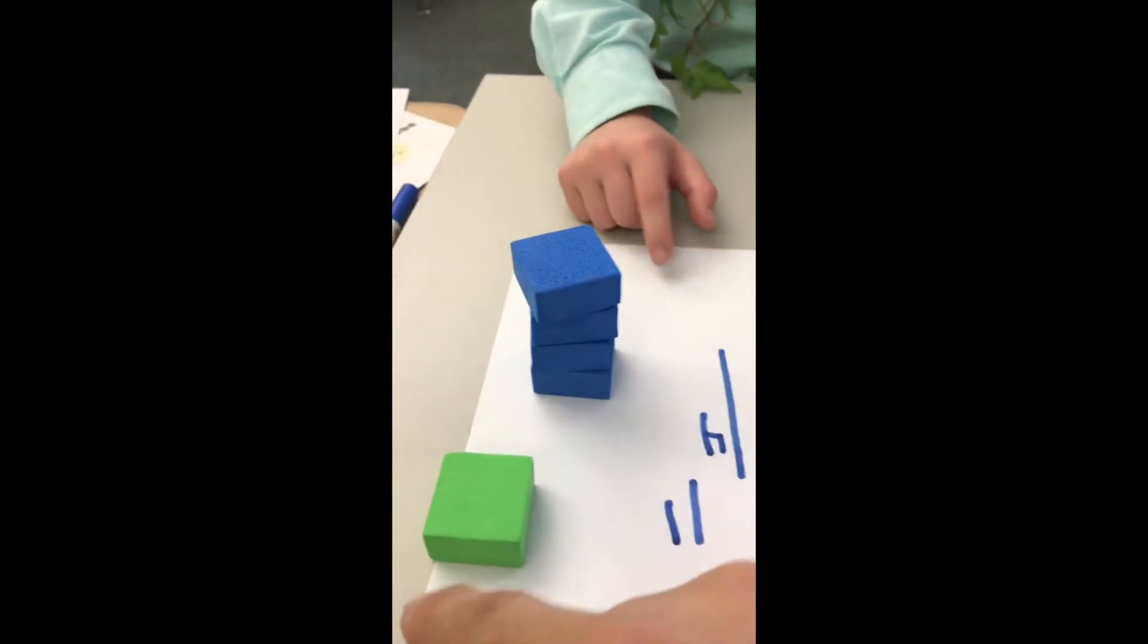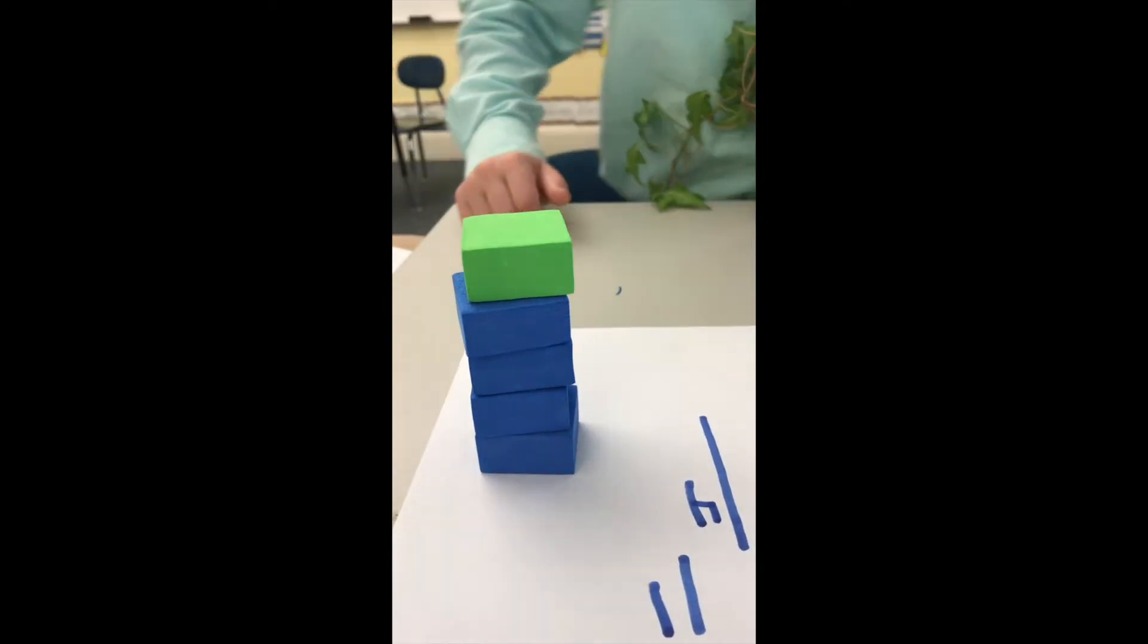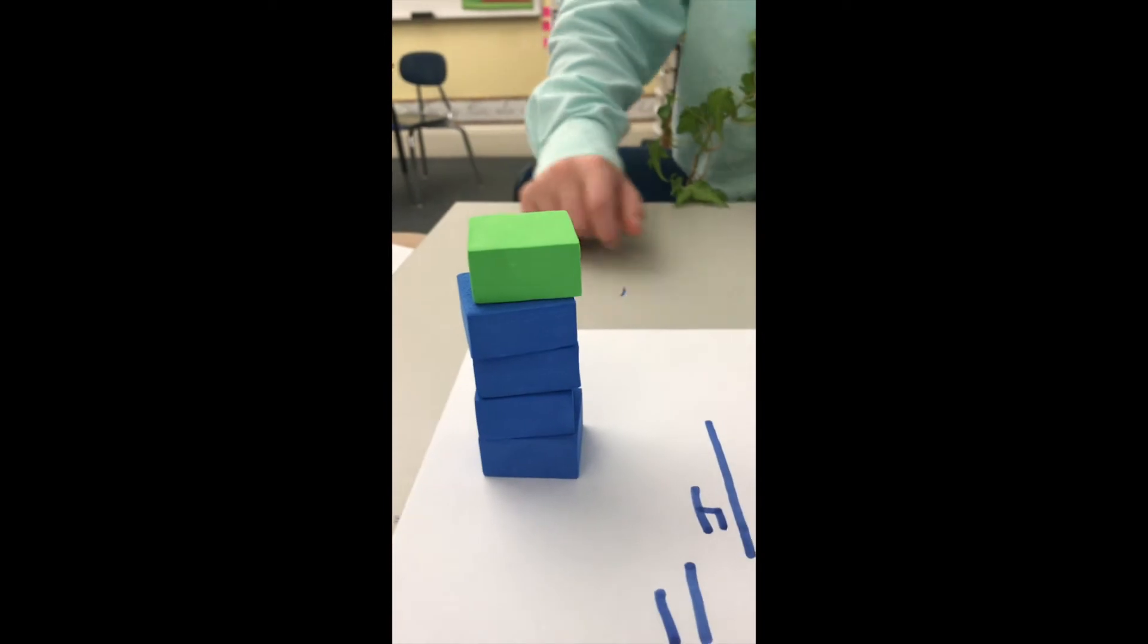What if you put the green on top of the blue? Can you make a sentence? Four plus one equals five. Yeah, and let's put this in there - that's the stack of all the stuff. How tall is that stack? Five.